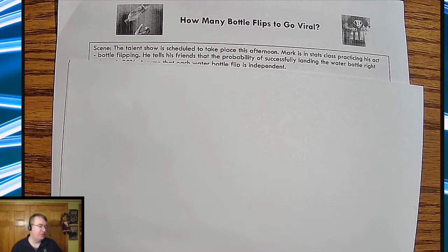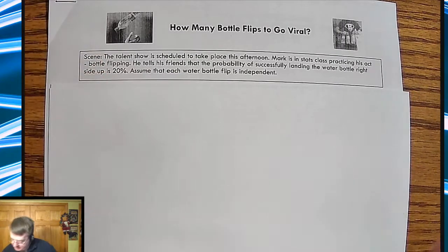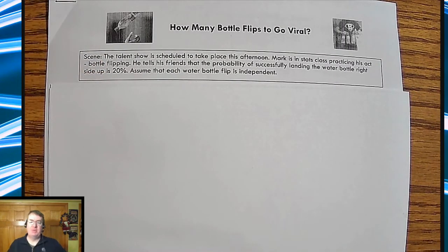So what we're going to end up doing is we're going to talk about a situation where, in this case, Mark here is in a stats class practicing his water bottle flipping. He tells his friends that practicing successfully, he's got about a 20% chance doing it, and we're going to assume each water bottle flip is independent.